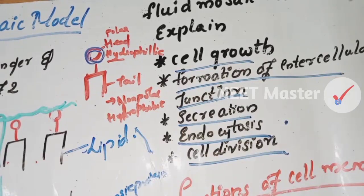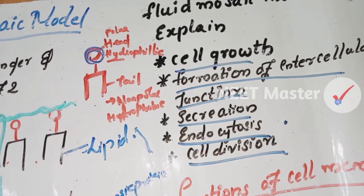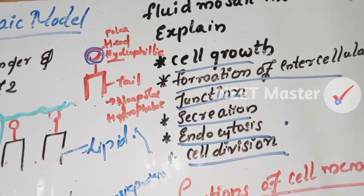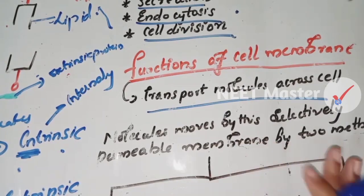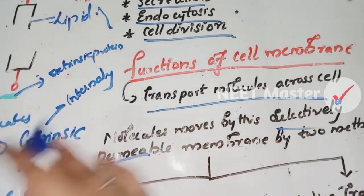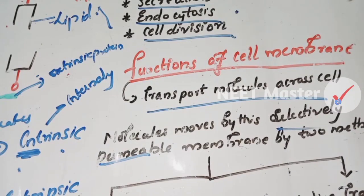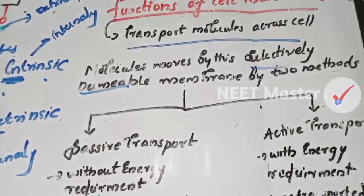The main function of the cell membrane is that it forms the boundary of the cytoplasm. The main function also includes transport of molecules across the cell. Molecules move across the selectively permeable membrane by two methods: active transport and passive transport.